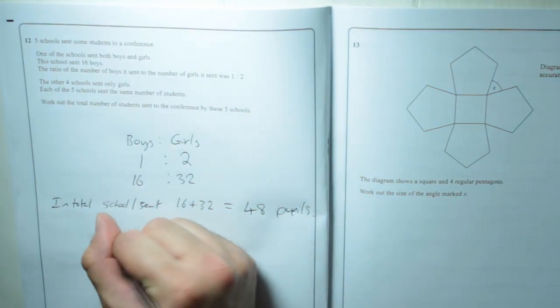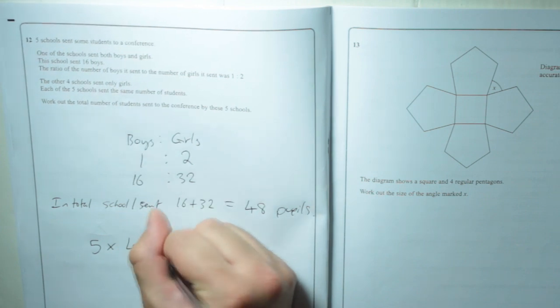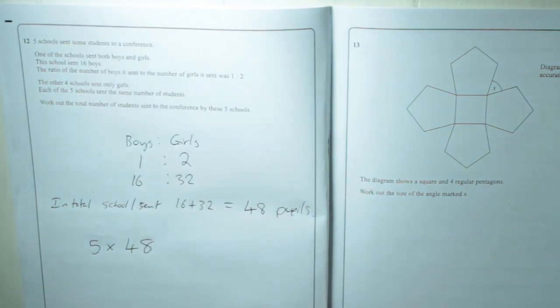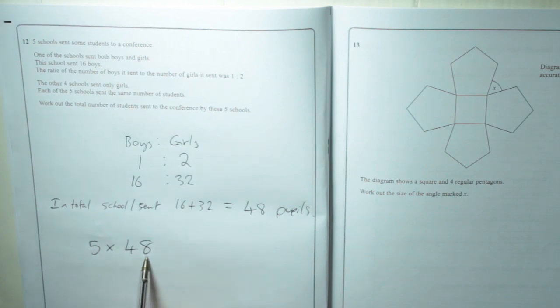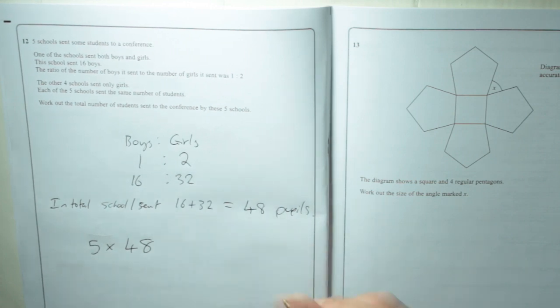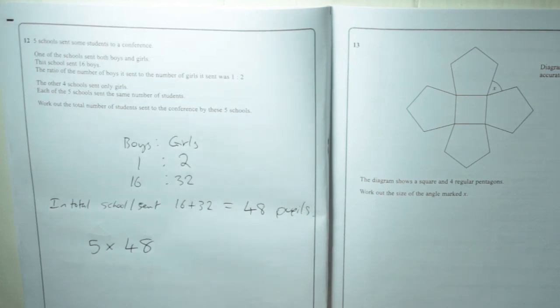We're just going to do 5 multiplied by 48. You could use the short multiplication method here, or you could do 48 times 10 is 480, and then half it—that's 240. So 240 students.